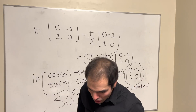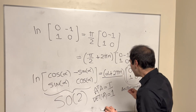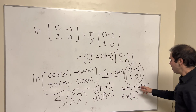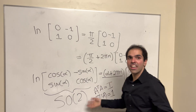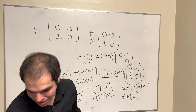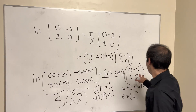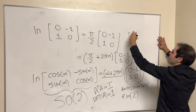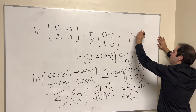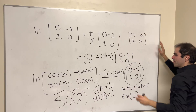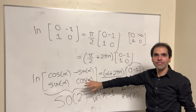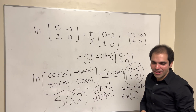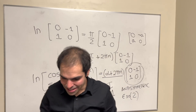What this means is: if you take ln of the special orthogonal group SO(2), you get a multiple times this matrix, which is an antisymmetric matrix. This is what's called the Lie algebra of SO(2), and not only is it antisymmetric, it's also a generator of antisymmetric matrices of the form [[0, −a], [a, 0]].